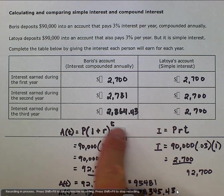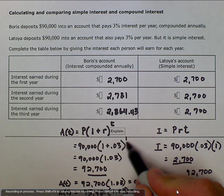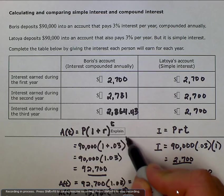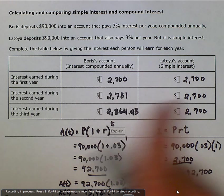we could have gotten this answer here by just plugging in the number 3 here for time. If we wanted to know how much was going to be in the account after 3 years, we would have just plugged in 3 for our exponent and gotten the same thing. But I wanted to do it separately so you could see how it changes each year.